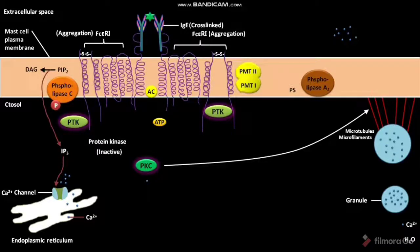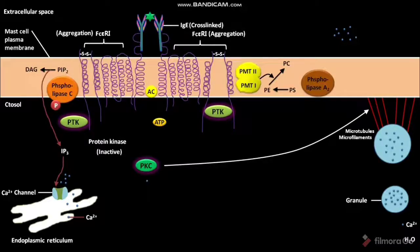Cross-linkage of FC-Epsilon-RI receptors also activates an enzyme. The activated enzyme converts PS into PE. Eventually, the PE is methylated to form PC. This methylation of PE to form PC is catalyzed by PMT1 and PMT2. The PCs accumulate on the exterior surface of the plasma membrane.